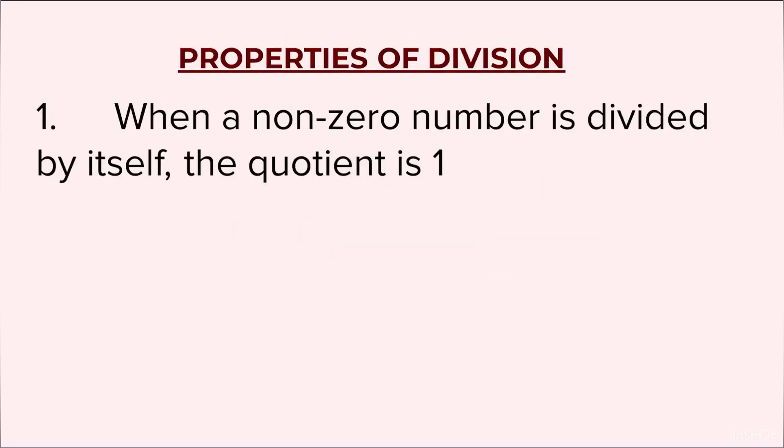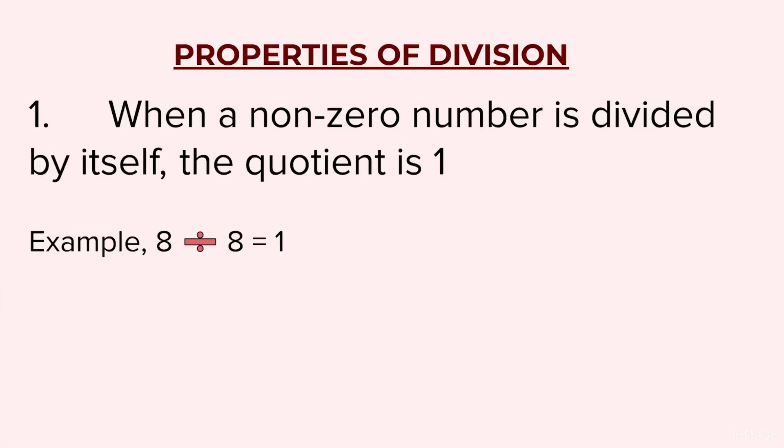Properties of division. When a non-zero number is divided by itself, the quotient is 1. Example: 8 divided by 8 is equal to 1. Here, the dividend and the divisor are both the same numbers. They could be any number. It could be 24 divided by 24 or 9 divided by 9. Every time we will get the answer as 1.